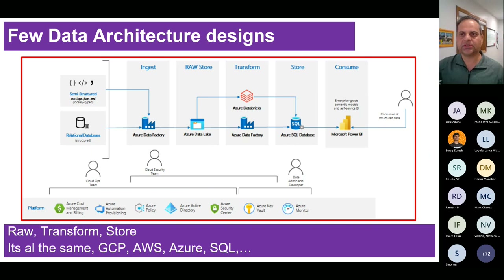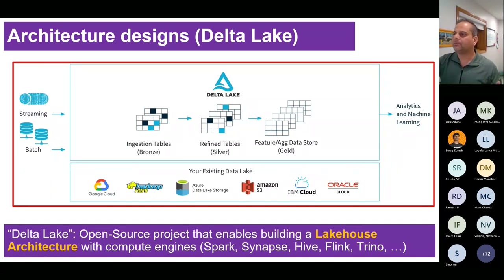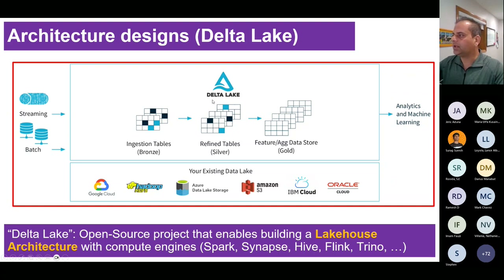I'm considering the audience has two to three years of experience and is going into the cloud world or starting their cloud journey. These are the streaming and batch data types. Streaming data means data which is continuously streaming, while batch data comes through an ETL process after a certain time - like a birthday application that runs every day. The first landing point is the bronze table, which is the raw zone.